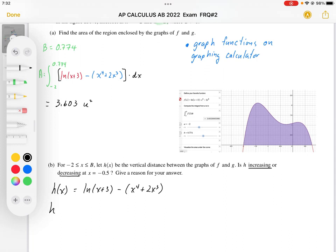Increasing or decreasing means the rate of change, or H prime. So we want H prime. We're going to differentiate that function. We're going to get 1 over X plus 3 minus 4X^3 minus 6X^2.